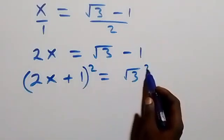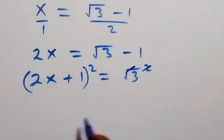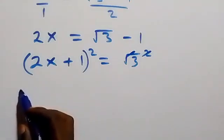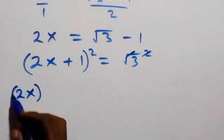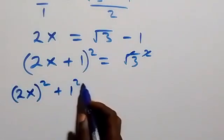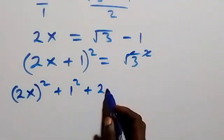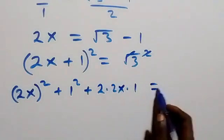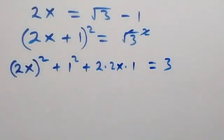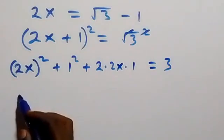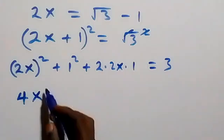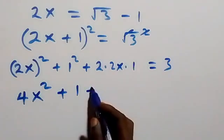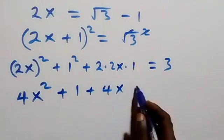We square this side and also square this side. Square cancels square root, giving 3. Then the expansion here gives us (2x + 1)² which is 4x squared plus 1 plus 4x, and this equals to 3.